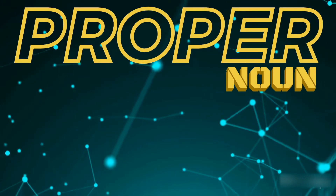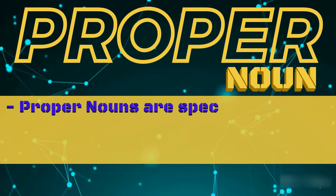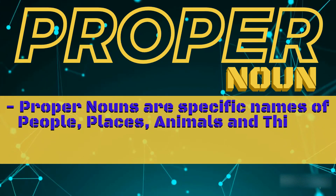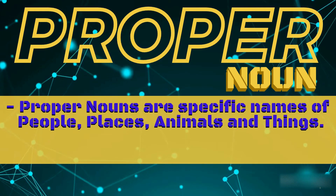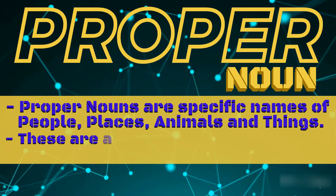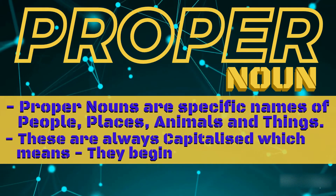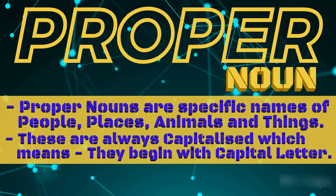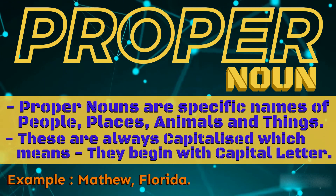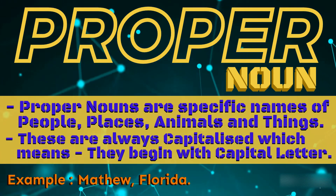What is a proper noun? Proper nouns are specific names of people, places, animals and things, and these are always capitalized, which means they begin with a capital letter. Matthew, which is a name, and Florida, which is a place, are examples of proper nouns.